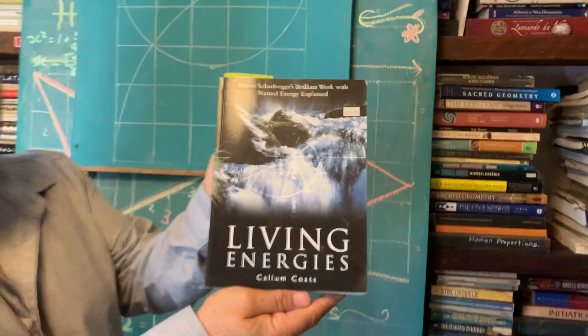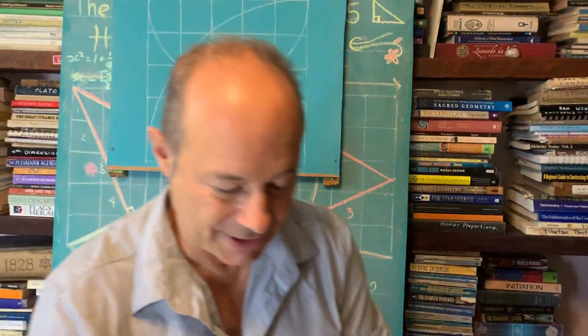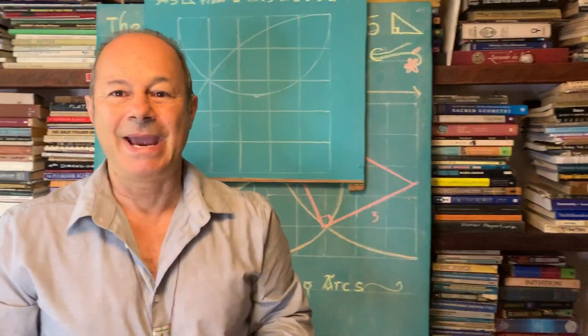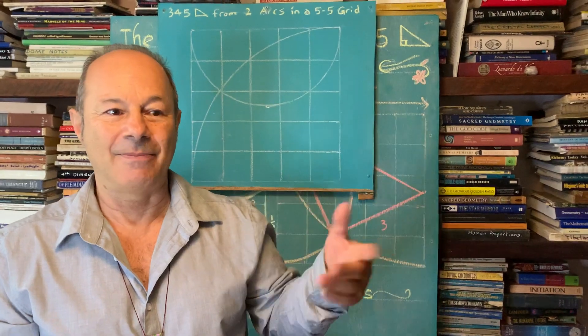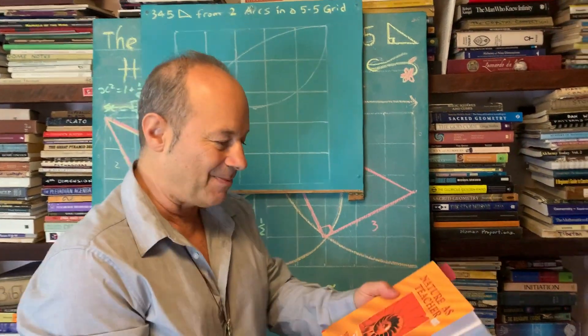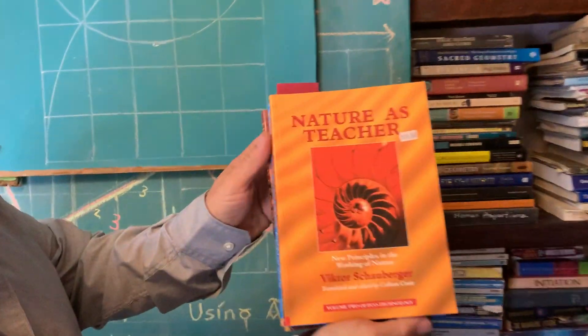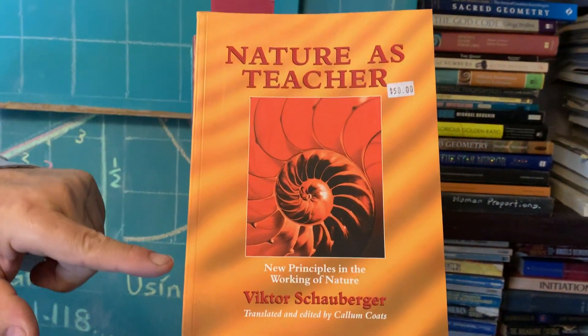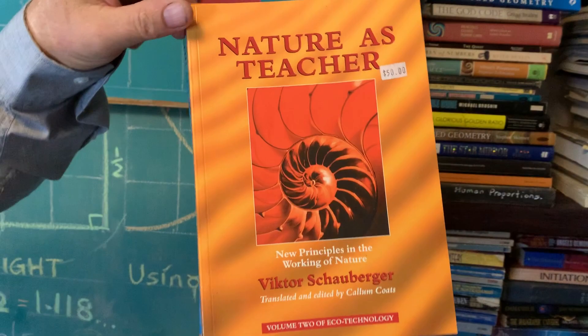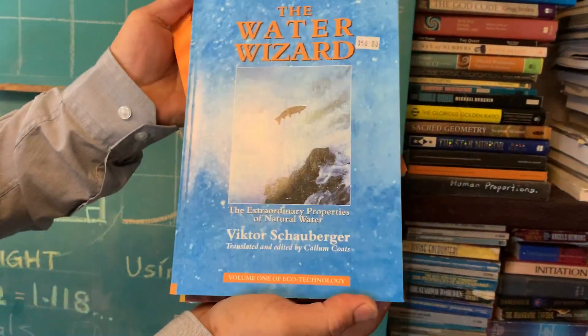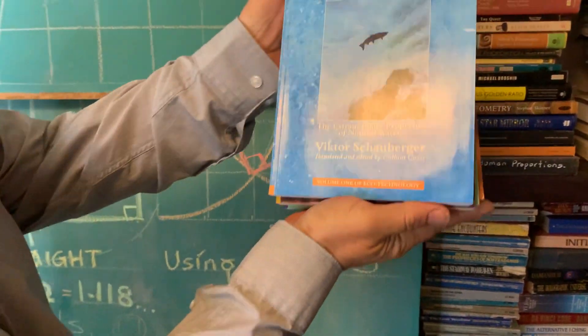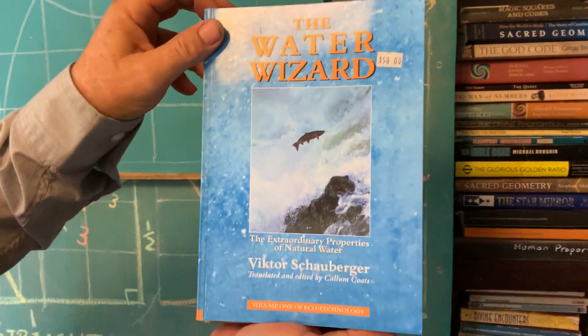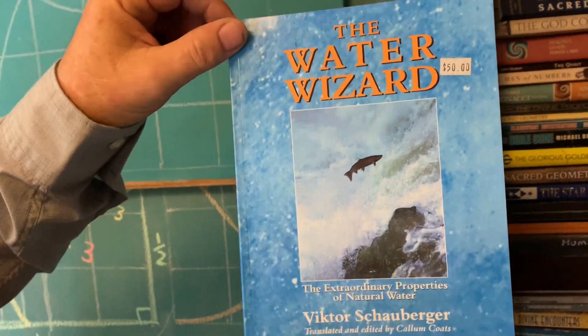Callum is a world-renowned architect, mystic, mason of the highest order, and he was hired to translate four books by the man who gave us water technology called Viktor Schauberger. Viktor Schauberger wrote four books and Callum Coats translated them from the German. Nature as Teacher, and then we've got The Water Wizard.